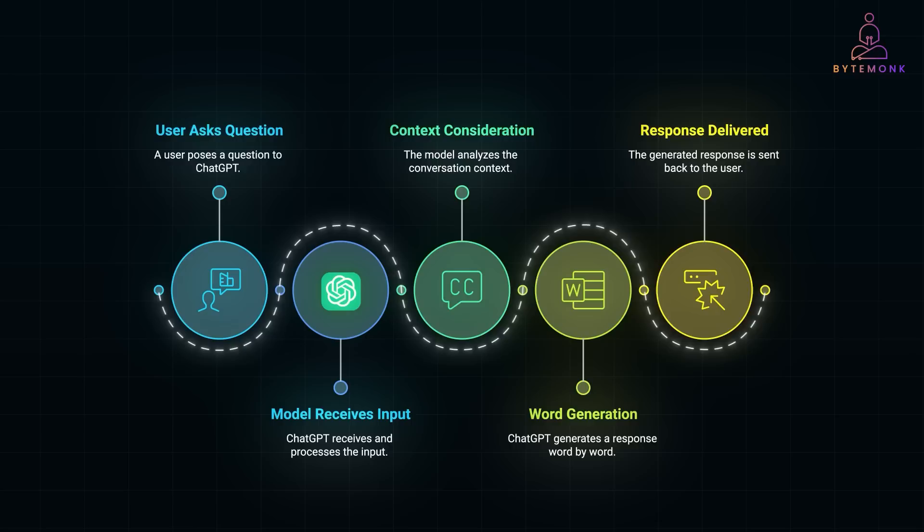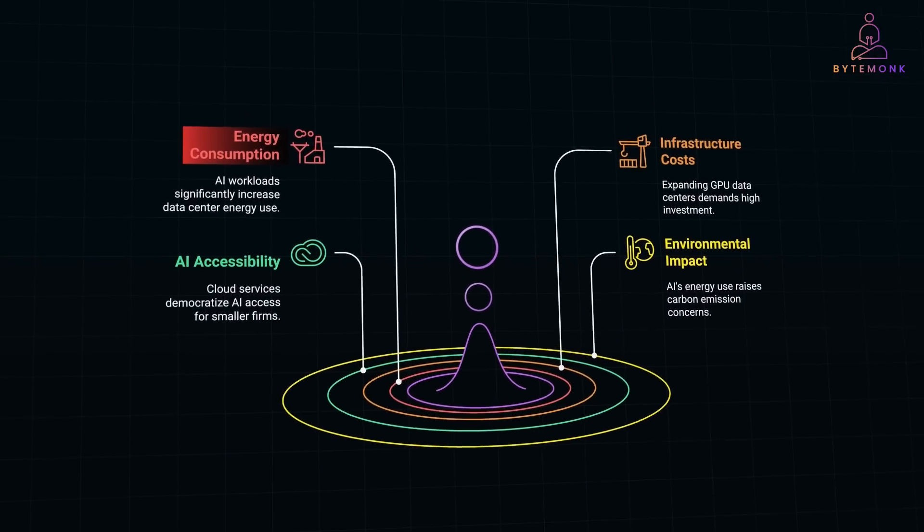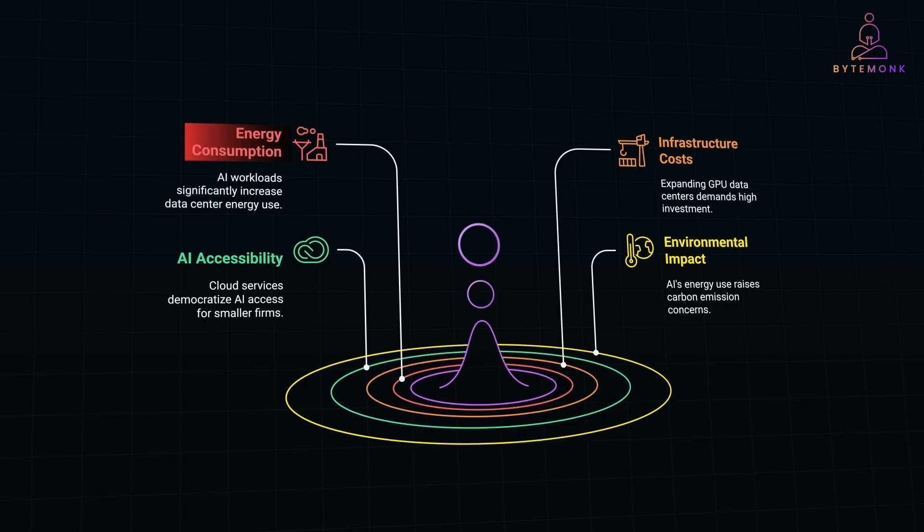The move from CPUs to GPUs and the rise of AI workloads like ChatGPT have some major implications on the data centers. AI workloads are incredibly energy intensive. Training a single large language model like GPT-4 can consume as much energy as hundreds of homes used in a year. Data centers are now consuming more power than ever. And this trend is only going to increase as AI becomes more widespread. And this has led to push for more energy efficient hardware and renewable energy sources.